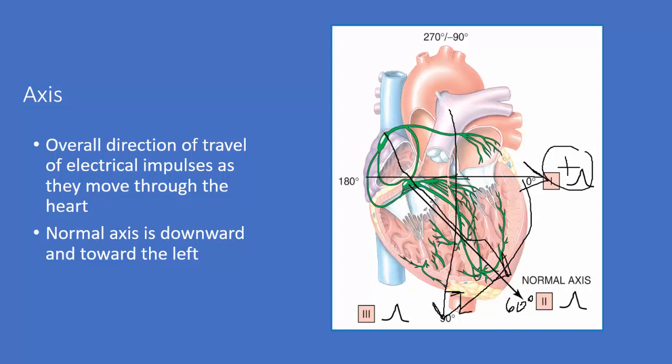The hexaxial reference system continues with lead three at 120 degrees. You'd have AVL up here and AVR somewhere around in here. That gives you your six leads: one, two, and three, AVF, AVR, and AVL.